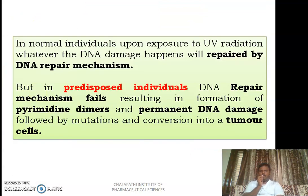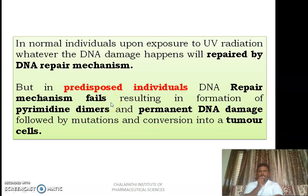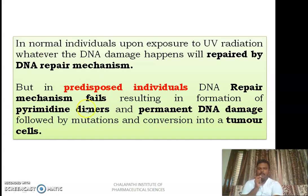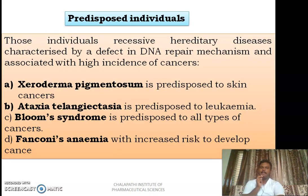An important thing to mention in detail is predisposed individuals. Generally, compared to normal individuals, those who suffer from some types of hereditary disorders in which they lack DNA repair mechanism are called predisposed individuals. If those individuals are chronically exposed to UV radiation, they will develop skin cancers or other types of cancer at a greater rate.